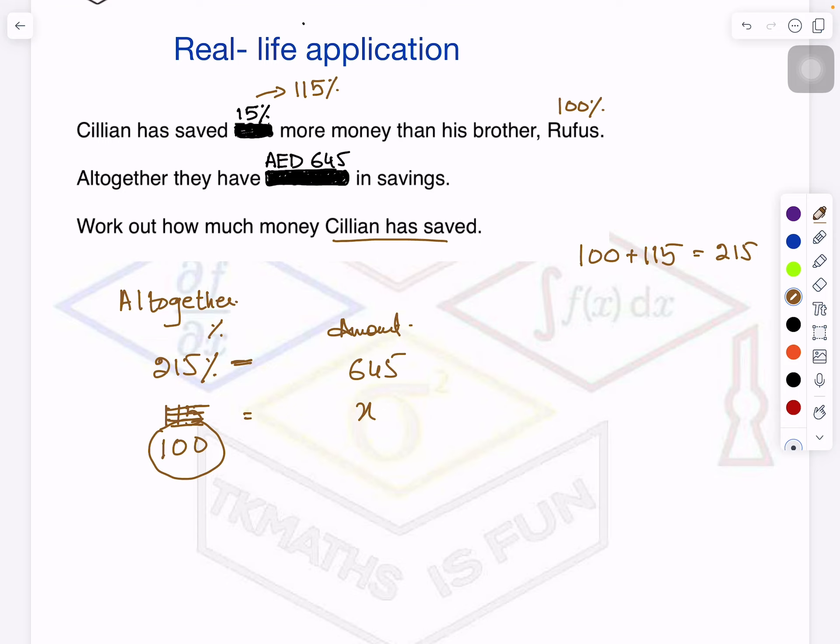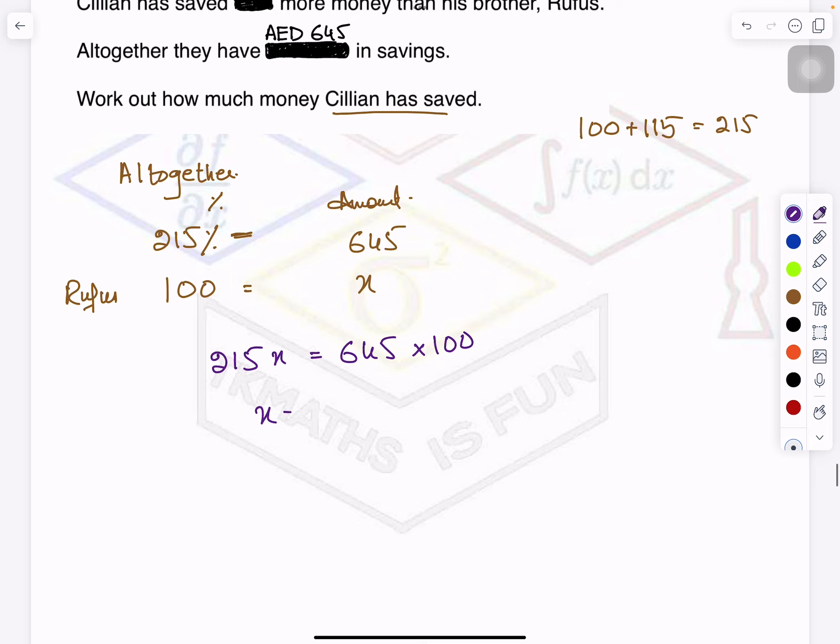So let's do it with 100. You know why I'm keeping this? Because calculation with 100 is always easy. So rather than writing here 115, I would like to know the money Rufus will have - that will make my life a little simple, calculation simple. Okay, so now you know you will cross multiply. So 215x equals 645 times 100, and then x equals 645 times 100 divided by 215.